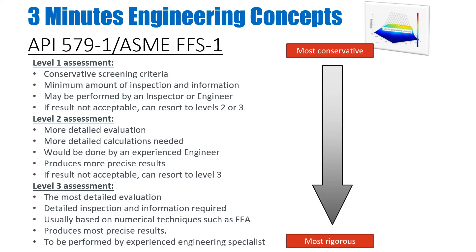As you move from Level 1 to Level 3, you move from a more conservative to a more rigorous approach — the conservatism decreases while the rigor increases. At Level 1, you perform a conservative screening where a minimum amount of inspection information is available, performed by an inspector or engineer.